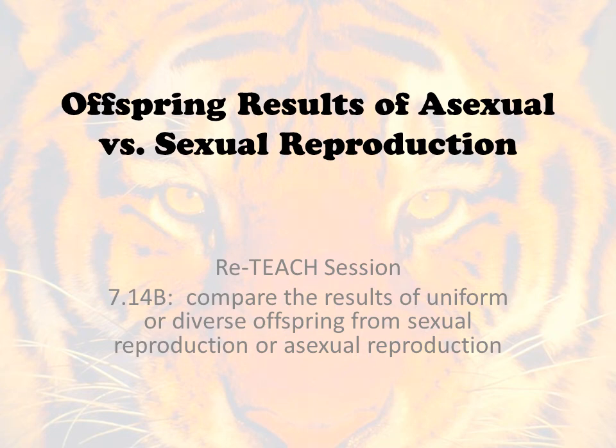Hey Tigers, welcome to your digital reteach for offspring results of asexual versus sexual reproduction. This will be a digital reteach for 7.14B. In this TEKS we want to compare the results of uniform or diverse offspring from sexual reproduction or asexual reproduction.